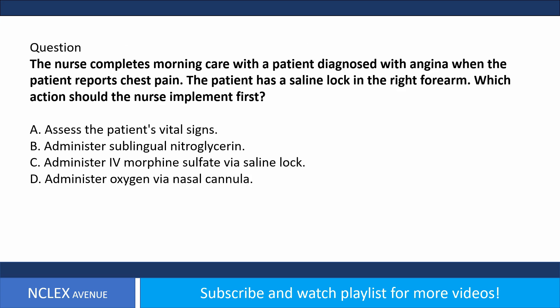Question. The nurse completes morning care with a patient diagnosed with angina when the patient reports chest pain. The patient has a saline lock in the right forearm. Which action should the nurse implement first? A. Assess the patient's vital signs. B. Administer sublingual nitroglycerin. C. Administer IV morphine sulfate via saline lock. D. Administer oxygen via nasal cannula.